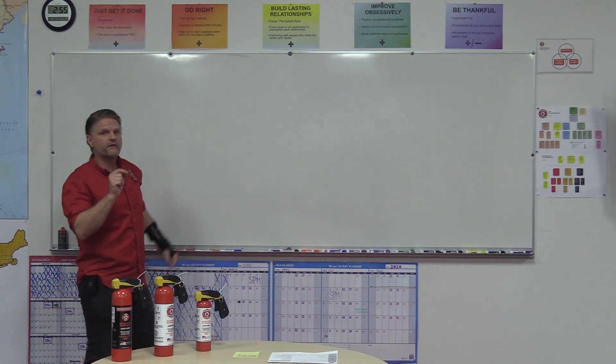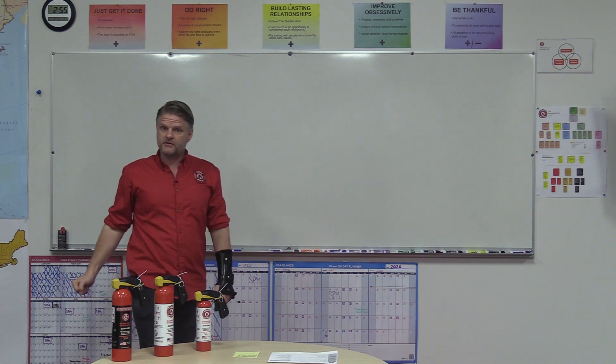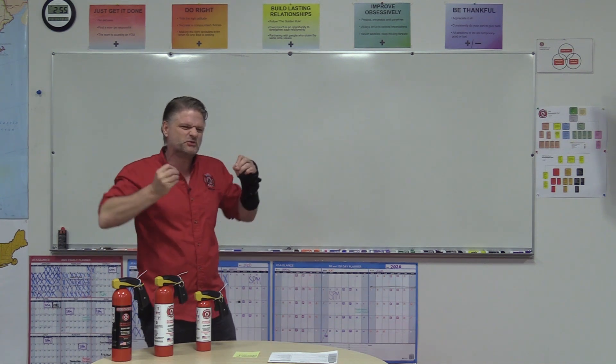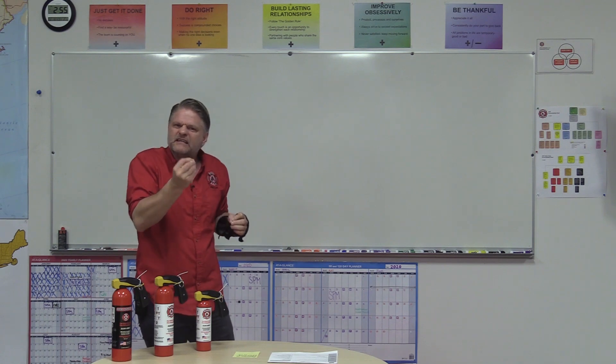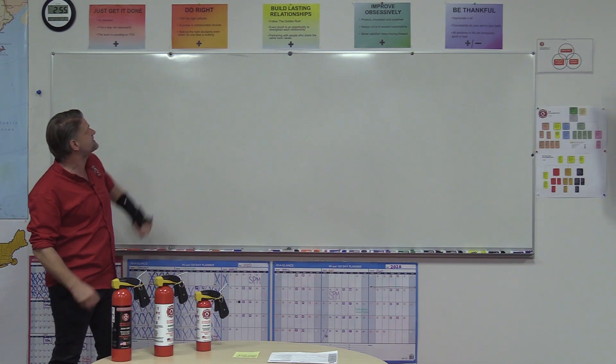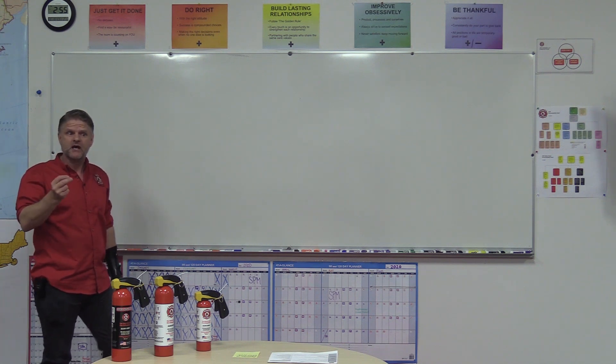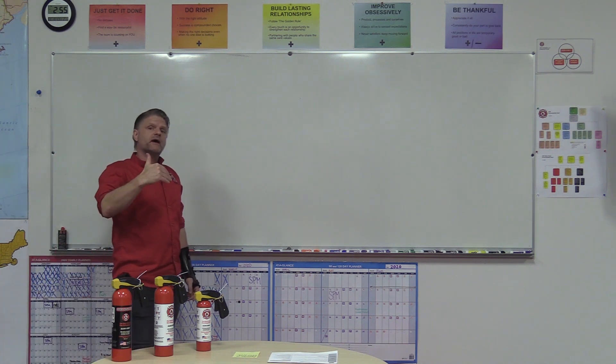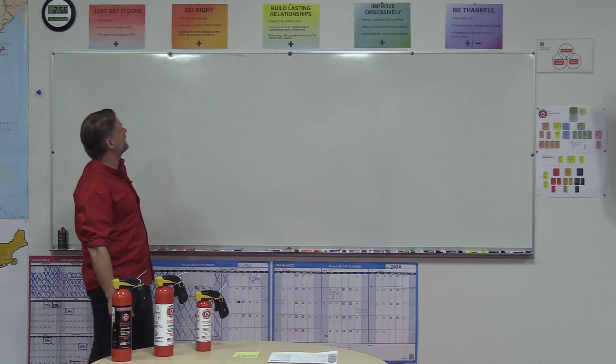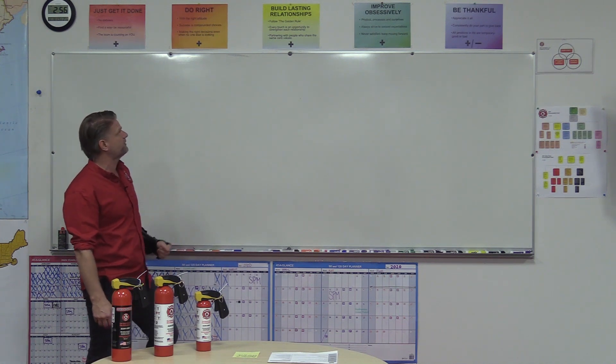Do right. First bullet: with the right attitude. You might have experienced it yourself. I know I have. You go to a business, they ultimately do right, but they just do it begrudgingly. You knew that they didn't want to, so we strive to do right with the right attitude. Next is success is compounded choices. You make more good choices than bad, you're probably going to have a good life. Making the right decisions even when no one else is looking.